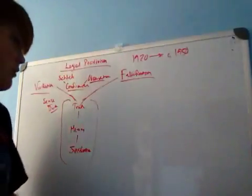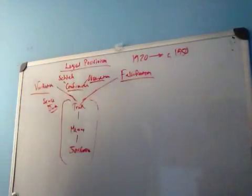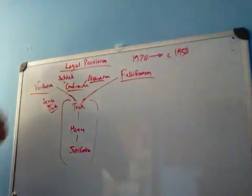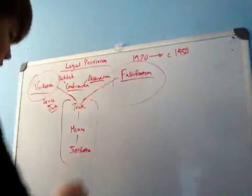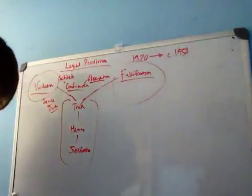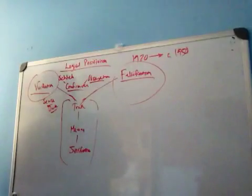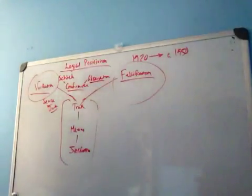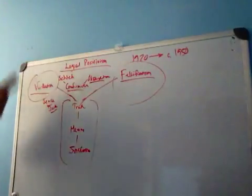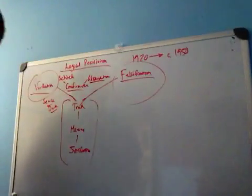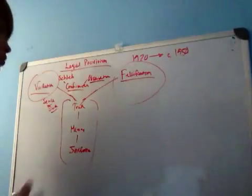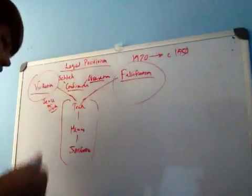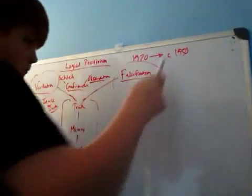This is a brief little video about a couple of concepts — verification and falsification — in the movement in analytic philosophy called logical positivism. This whole movement kind of started in the 1920s and sorted itself out in the 50s.